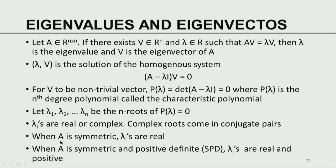For a special class of matrices — when A is symmetric — the lambdas are real. When A is symmetric and positive definite, such matrices are called SPD (S for symmetric, PD for positive definite), the lambdas are real and positive.